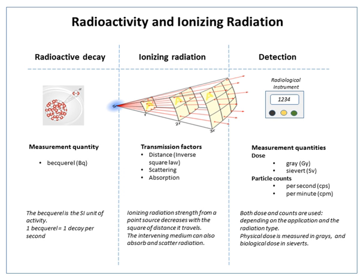The Becquerel is the SI-derived unit of radioactivity. One Becquerel is defined as the activity of a quantity of radioactive material in which one nucleus decays per second. The Becquerel is therefore equivalent to an inverse second, s⁻¹.